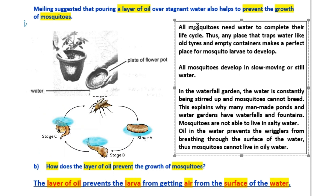All mosquitoes need water to complete their life cycle. Thus, any place that traps water, like old tires and empty containers, makes a perfect place for mosquito larvae to develop. All mosquitoes develop in slow-moving or still water. In a waterfall garden, the water is constantly being stirred up and mosquitoes cannot breed. This explains why many man-made ponds and water gardens have waterfalls and fountains.